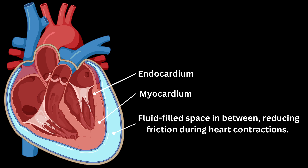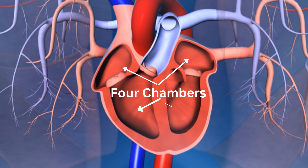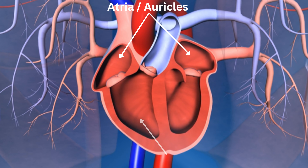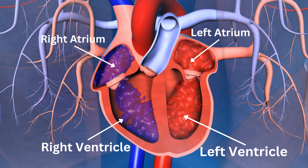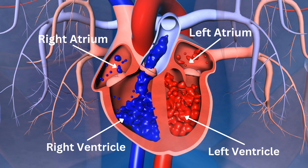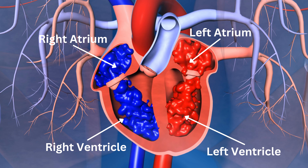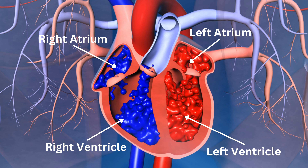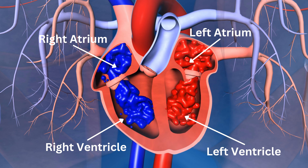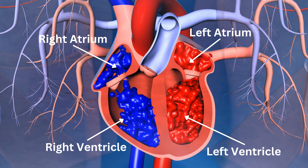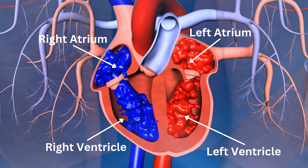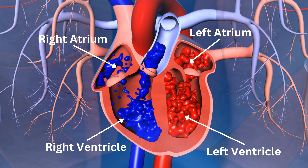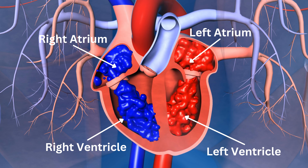The heart is composed of four chambers — two atria and two ventricles. The right atrium receives deoxygenated blood from the body, while the left atrium receives oxygenated blood from the lungs. The right ventricle pumps deoxygenated blood to the lungs, and the left ventricle pumps oxygenated blood to the rest of the body.